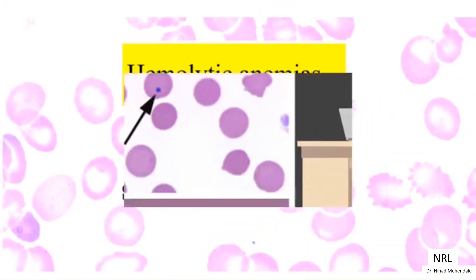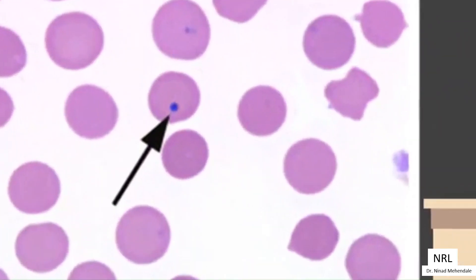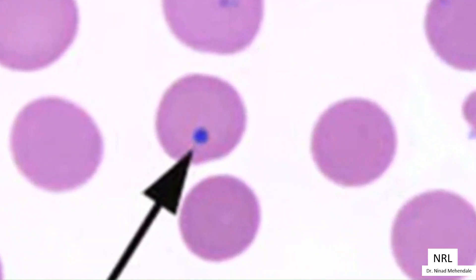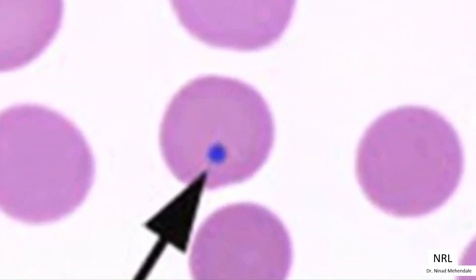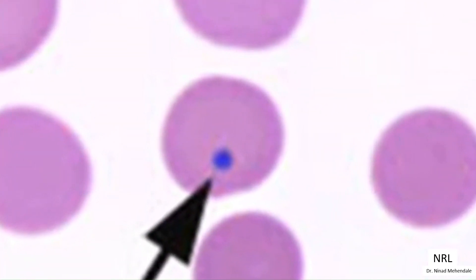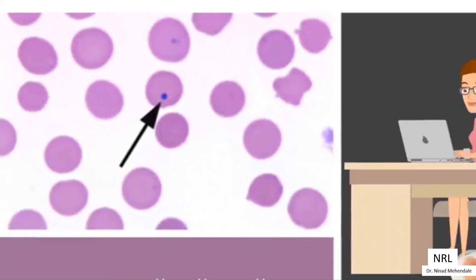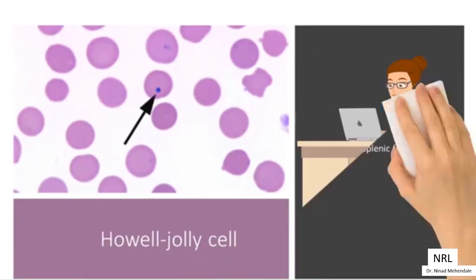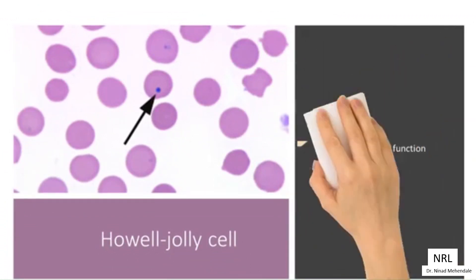Case 9: Howell-Jolly Cell is an erythrocyte with nuclear remnants. Howell-Jolly bodies are seen with markedly decreased splenic function.